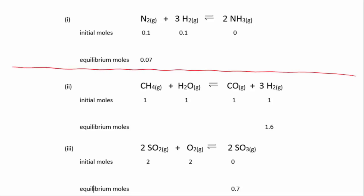I'll just divide them up so you can see there are three separate problems. If we take the first one here, you can see that we have a reaction where nitrogen is reacting with three moles of hydrogen to give two moles of ammonia, and it's an equilibrium.